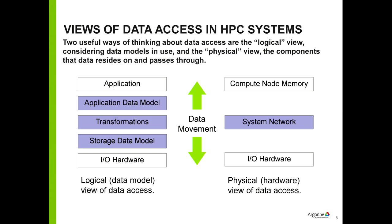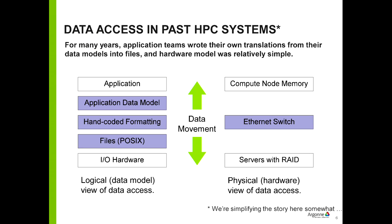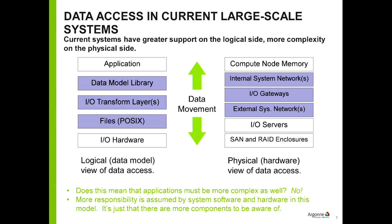This slide shows two views of how you get from the application to the storage system. On the software side, there's the application data model you're trying to translate to the storage data model. On the hardware side, you're going from memory in each compute node down to IO hardware. A few years ago this tended to be a manual translation — an application would come up with its own custom format. Hardware-side things were relatively simple: compute nodes, storage nodes, and a switch hooking them up.